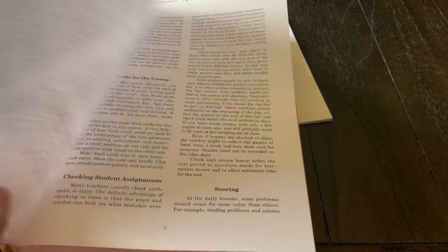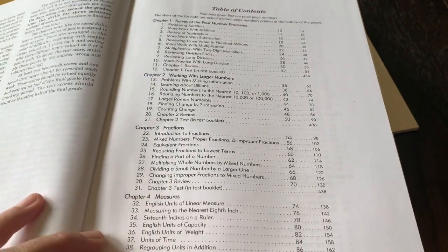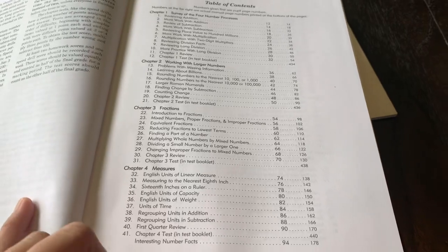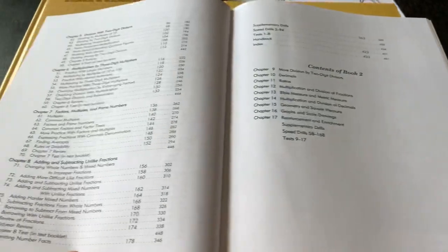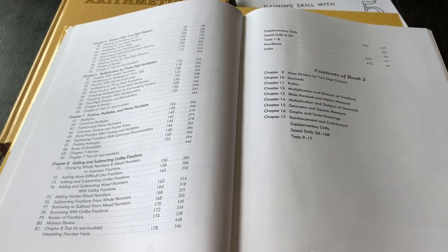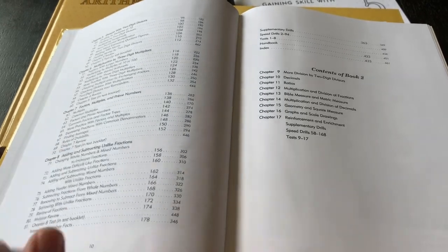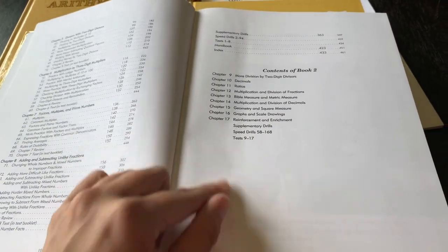So the scope and sequence for arithmetic five, I'll just show you very quickly. So there are eight chapters in one book, and then the other book will finish out the year.